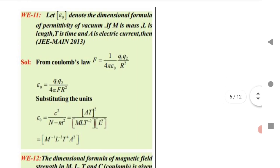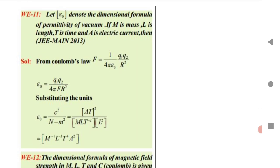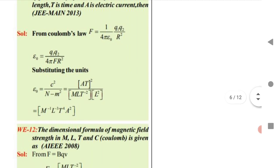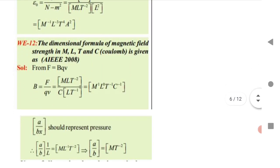To find the dimensional formula of epsilon-naught (permittivity of vacuum), use Coulomb's law: F = (1 / 4π ε₀) × (q1 q2 / r²). Rearranging: ε₀ = q² / (F × r²) = C² / (N·m²). Substitute the dimensional formulas for charge (A·T), force (M·L·T⁻²), and length to get the dimension of epsilon-naught.